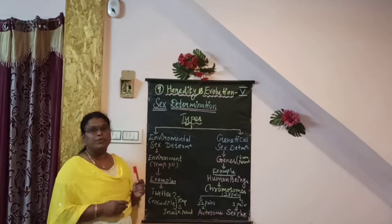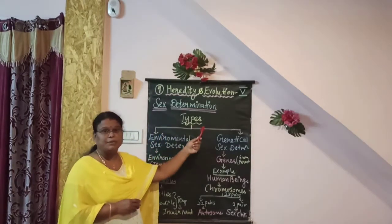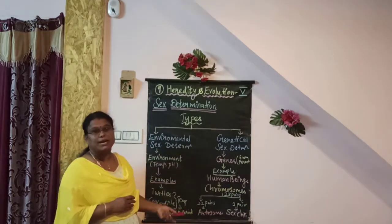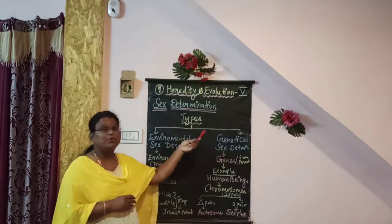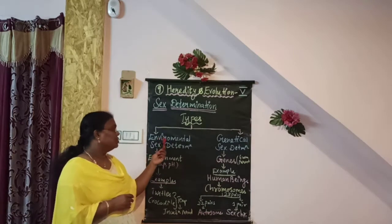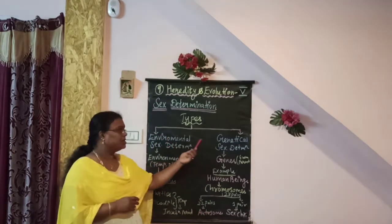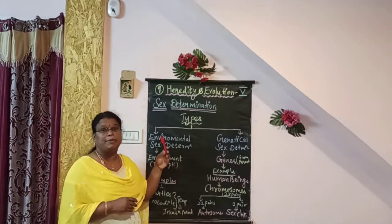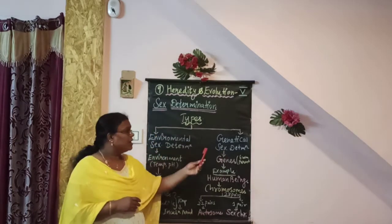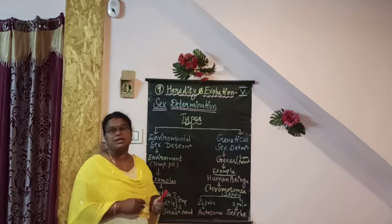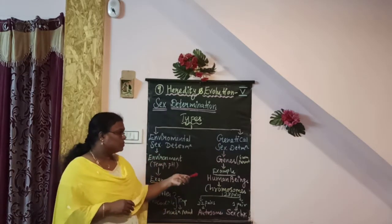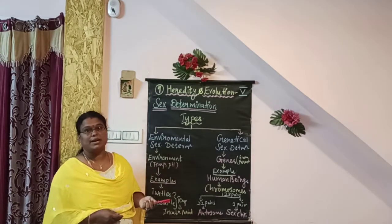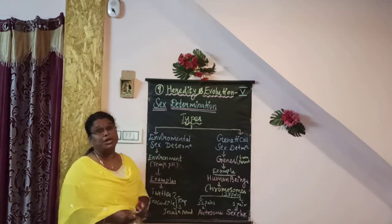In this video we studied about sex determination and how the gender — either male or female — of a child is determined. There are two types of sex determination: environmental sex determination and genetical sex determination. In most reptiles, the environmental factor temperature plays an important role. In human beings, genetical sex determination applies, where genes from both parents determine the gender. In the next part we will study in detail about sex determination in human beings.